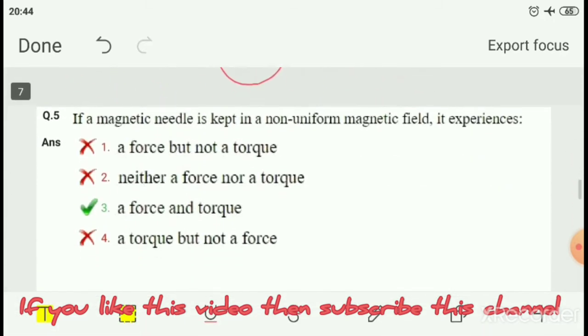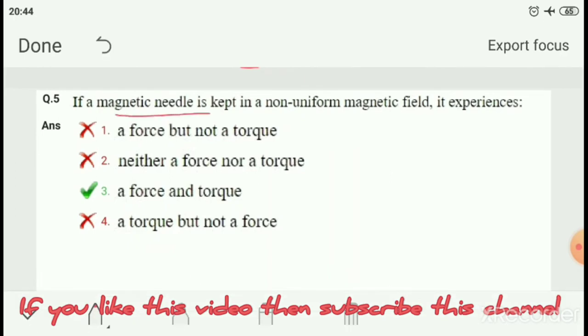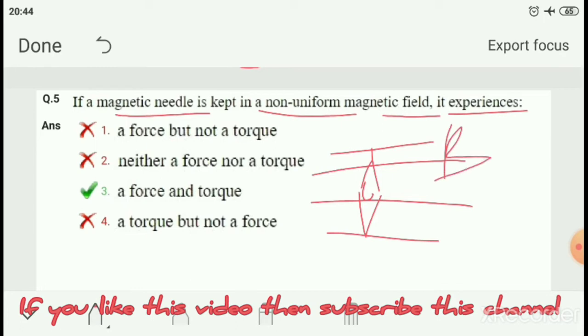Question number 5: If a magnetic needle is kept in a non-uniform magnetic field, it experiences? The magnetic needle with north pole and south pole is placed in a non-uniform magnetic field where the field value varies at different locations. The needle will experience both a force and torque. So option number 3, both force and torque, is correct.